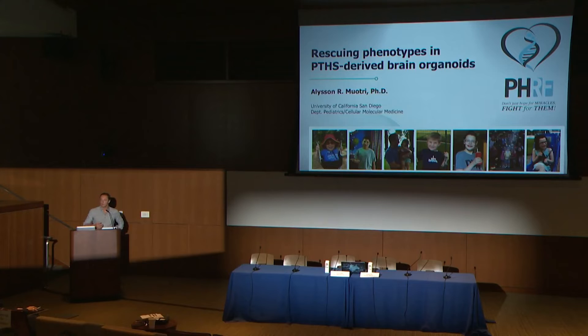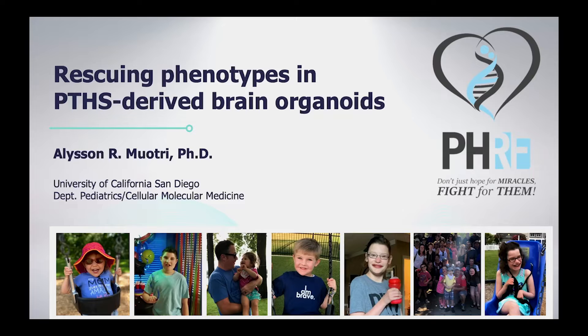The story is about modeling Pitt-Hopkins syndrome with stem cells and brain organoids. Pitt-Hopkins is a neurodevelopmental disorder caused by a mutation in a gene called TCF4, a transcription factor. It causes a profound type of autism where children most often do not talk, have seizures and epilepsy, and some cannot even move — really severe types of autism.